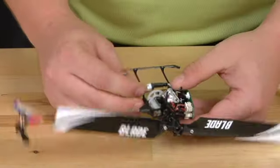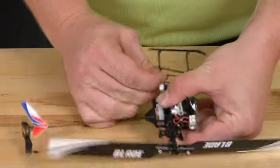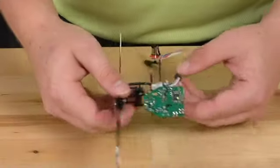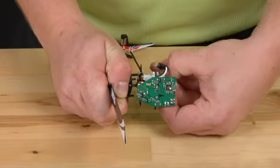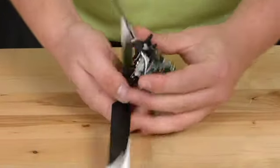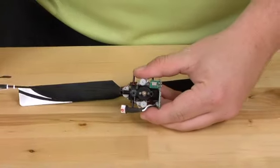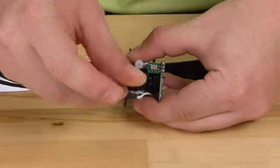We're then going to remove the landing gear, followed by the main gear. There will then be two screws on the bottom that hold the motor on. Remove both of those.